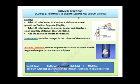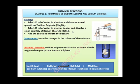The first example is the formation of barium sulphate and sodium chloride. The activity goes like this: first, take 100 ml of water in a beaker and dissolve a small quantity of sodium sulphate into it. Then take 100 ml of water in another beaker and dissolve a small quantity of barium chloride. You will now obtain two aqueous solutions.